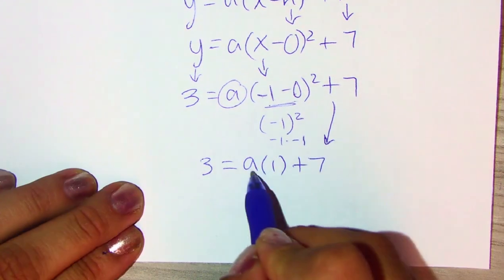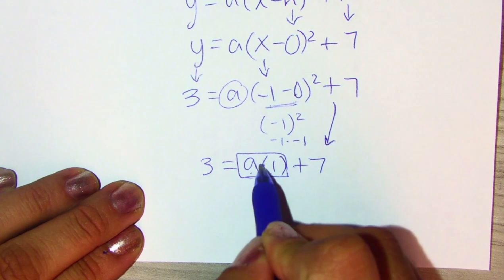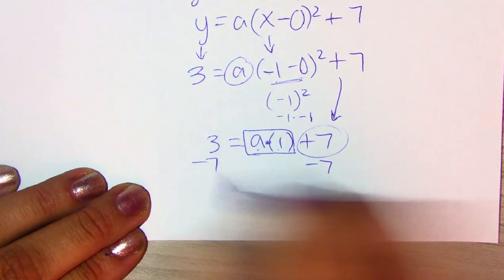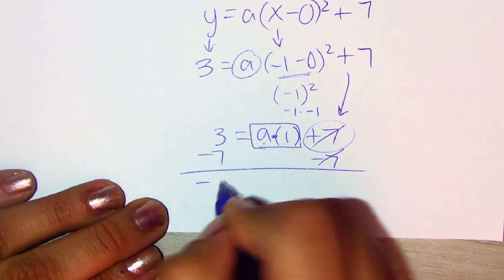And then, this A and 1 are attached to each other because they're multiplying. So, let's get rid of the 7 first. Minus 7 on both sides. You're left with negative 4.